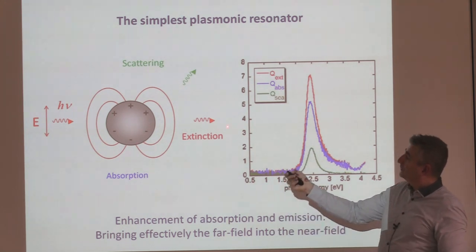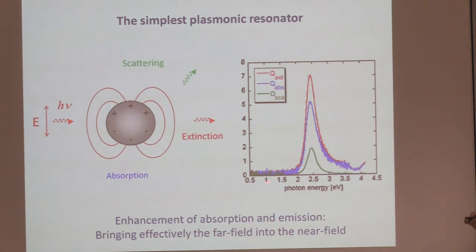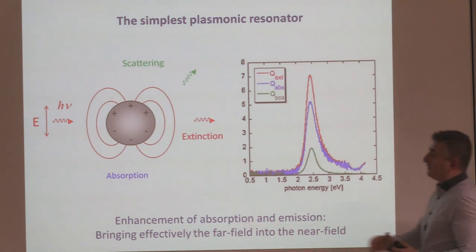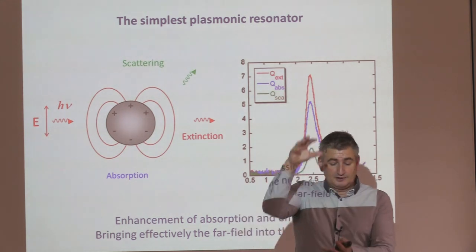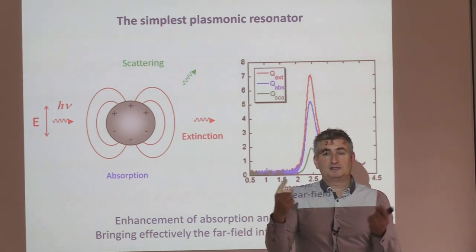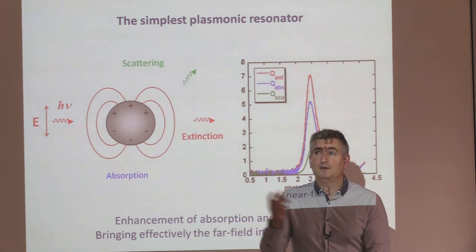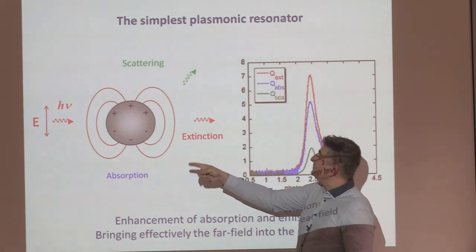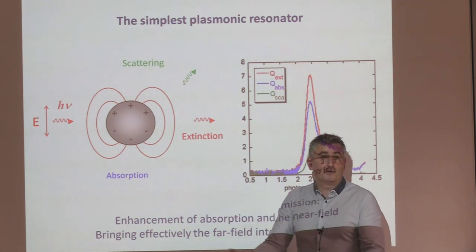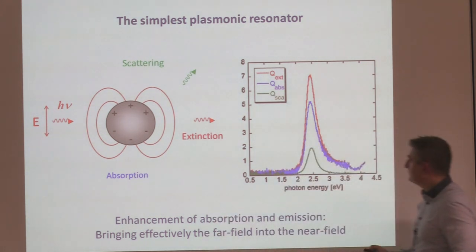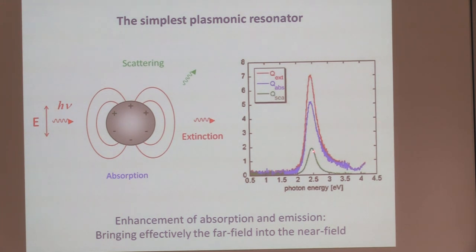Once you come with light and excite the plasmon — because of the metal response plus the finite geometry — it's like any condensed matter excitation. This plasmon, which lives for a few femtoseconds, has to give its energy to something. The two decay mechanisms are scattering back into a photon, or giving energy to phonons as heat, which is absorption. Combined, they give the total extinction. This is the localized surface plasmon resonance.